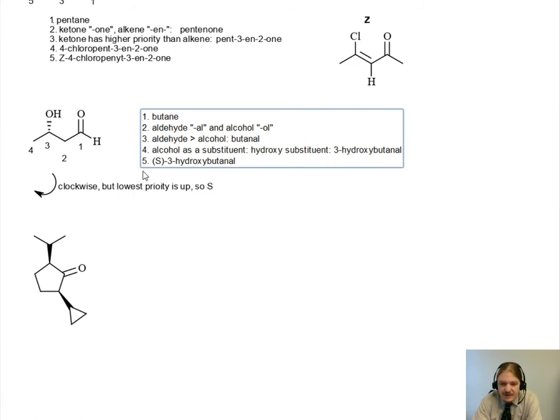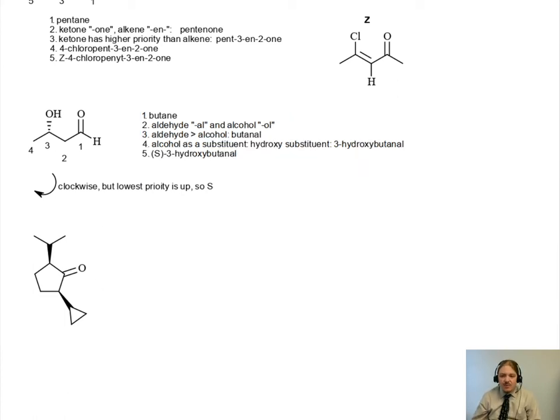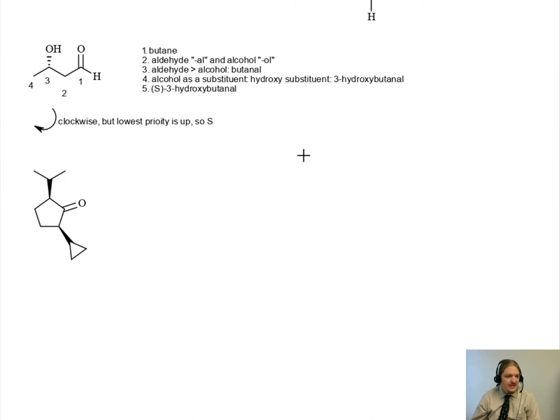The nice thing about IUPAC nomenclature system always is that there's a set of rules to follow. And as the molecules get more complicated, yes the rules can get more complicated, but if you can follow those rules, you can put together any name. So I have one more example. It's a cyclic ketone with two different substituents on it. And we're going to have to make some decisions about numbering here. But first we want to start with just the parent chain. This is a cyclopentane. And it has a ketone in it, so it becomes cyclopentanone.